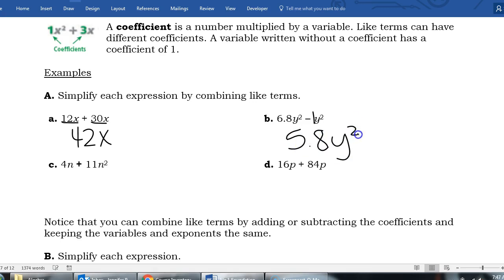So we subtract our coefficient, 6.8 take away the invisible one, gives me 5.8. But our variable, our y squared, stays the same.